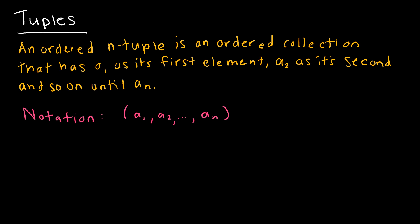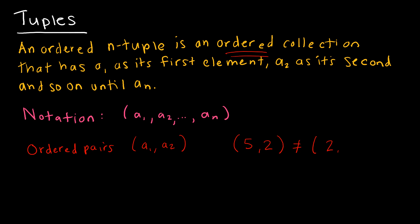A tuple is an ordered collection with A₁ as its first element, A₂ as its second, and so on. The most common example is ordered pairs. The key difference from a regular set is that order matters — the ordered pair (5, 2) is not the same as (2, 5), as those are very different points on the Cartesian plane.